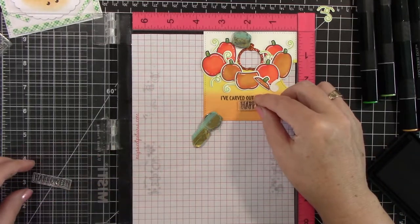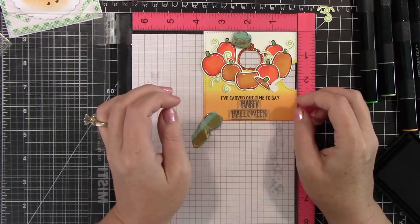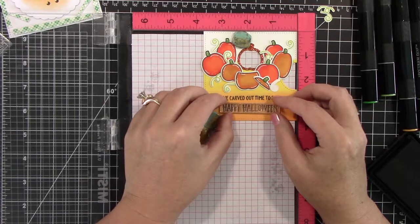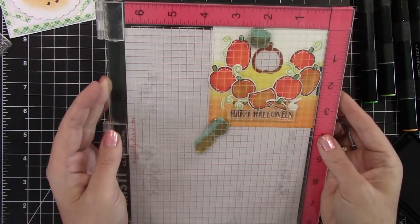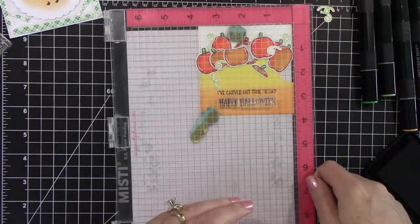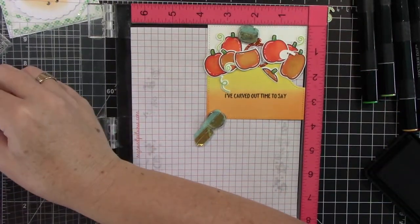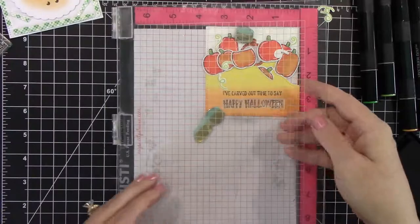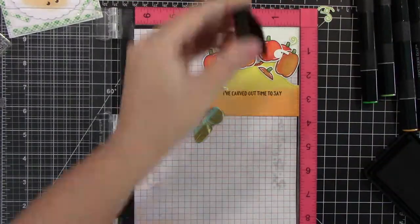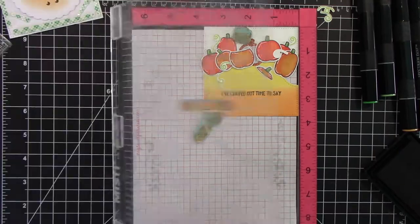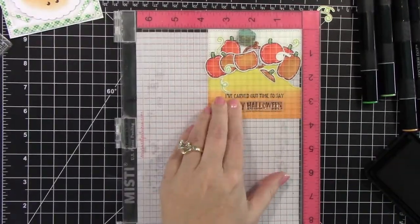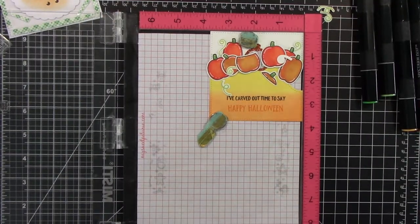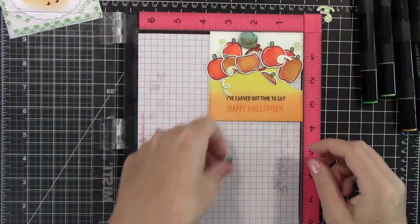And then I'm going to be stamping the Happy Halloween. And the Happy Halloween, I have used the Distress inks in Carved Pumpkin. The Squeezed Lemonade was actually a Distress Oxide ink. And the Carved Pumpkin was the Distress ink. Just trying to get those two sentiments lined up. And with the Carved Pumpkin, I had to do it a few times because I really wanted it to be fairly dark. But look how cute that turned out.